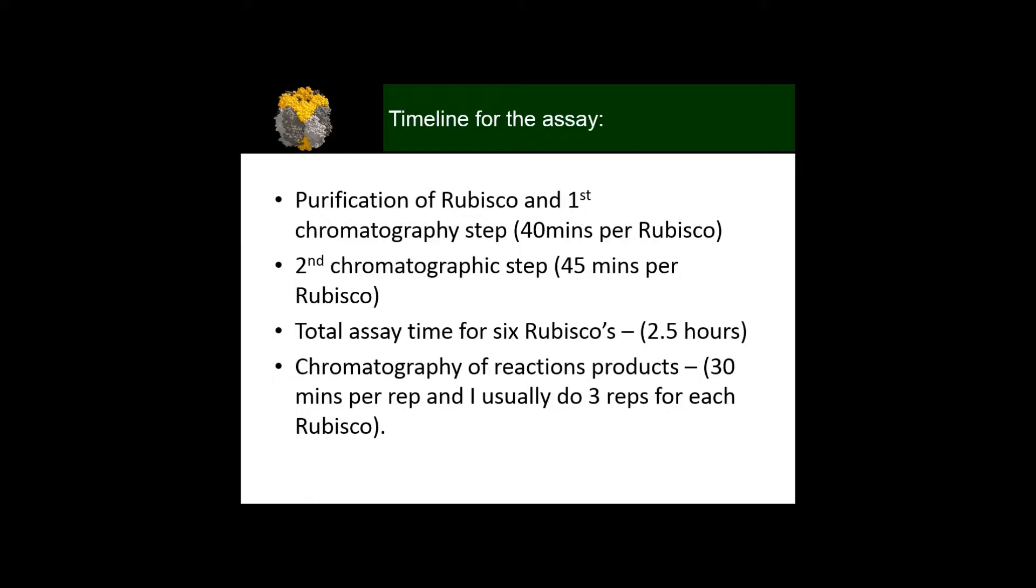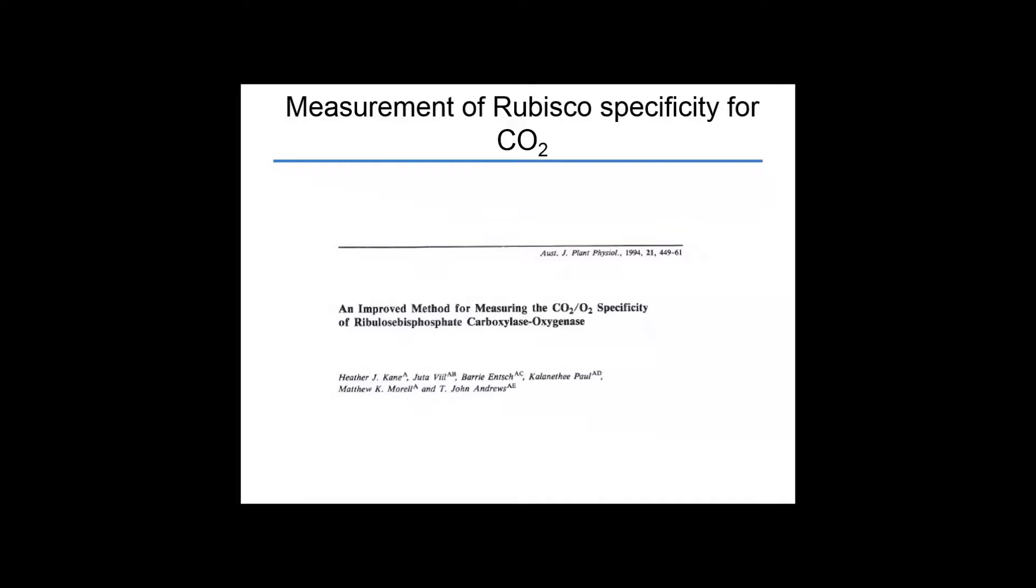A typical timeline for this assay: Purification of Rubisco takes about 40 minutes per enzyme, depending on how easy it is to grind up your plant material. The second chromatography step takes about 45 minutes on the Superdex. The total assay time for six Rubiscos is two and a half hours. The final chromatography of the reaction products is 30 minutes per rep, and I usually do three reps for each Rubisco. If you wish to find out more detail about our method, don't hesitate to email me, and I'll also refer you to this paper from 1994 by Heather Kane.